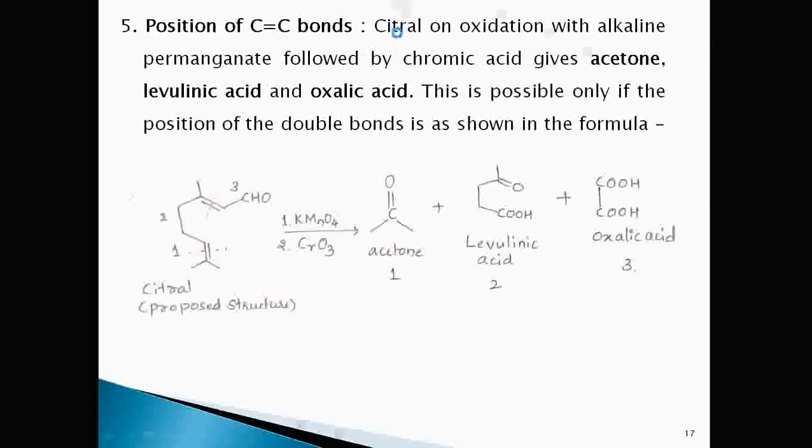To know the position of double bonds, citral on oxidation with alkaline permanganate followed by chromic acid gives three products acetone, levulinic acid and oxalic acid. The formation of these three products is possible only when the citral having this proposed structure or the position of double bonds are given in this proposed structure.